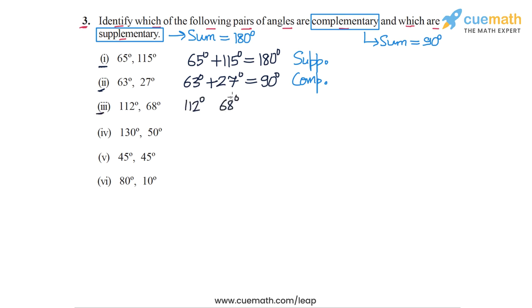In part 3 we have 112 degrees and 68 degrees. The sum of this pair of angles is 180 degrees, so this is a pair of supplementary angles.